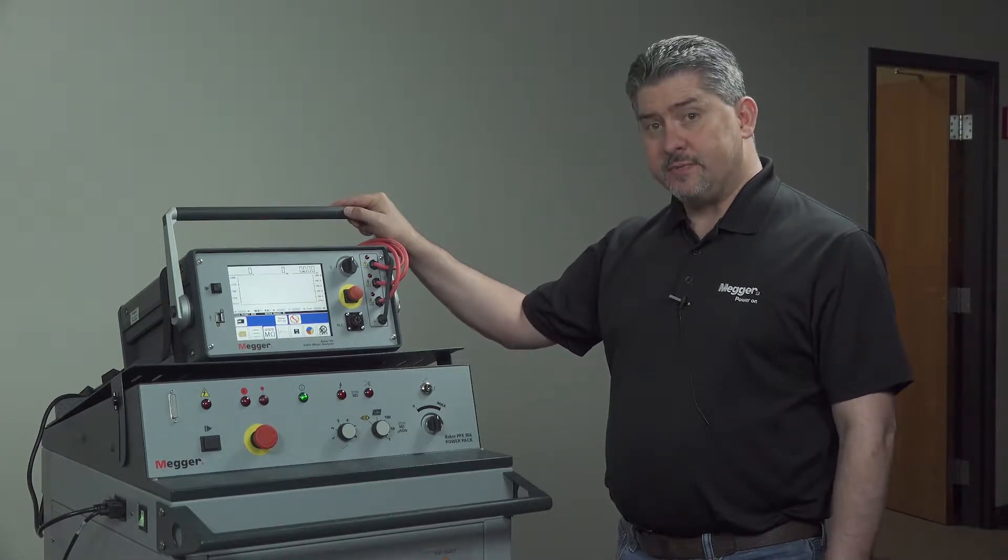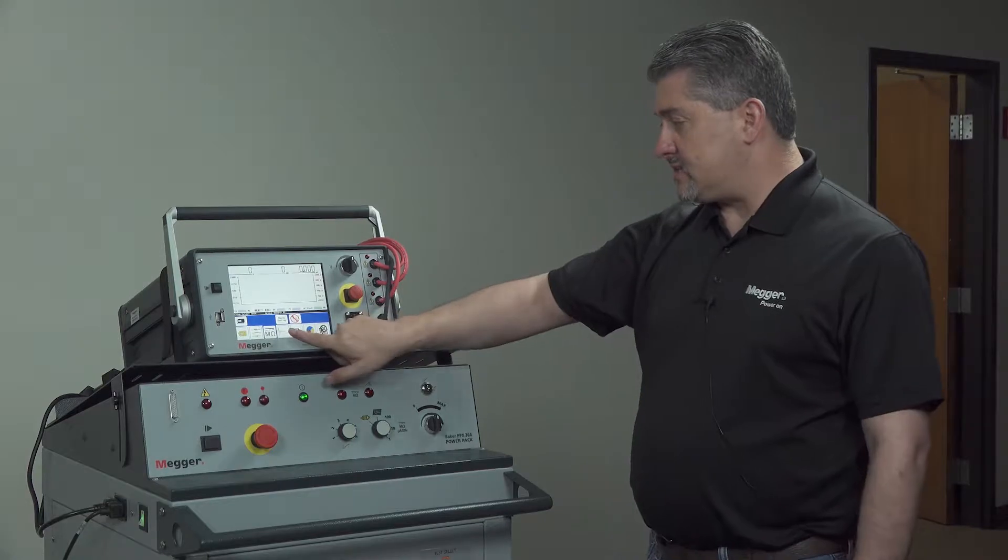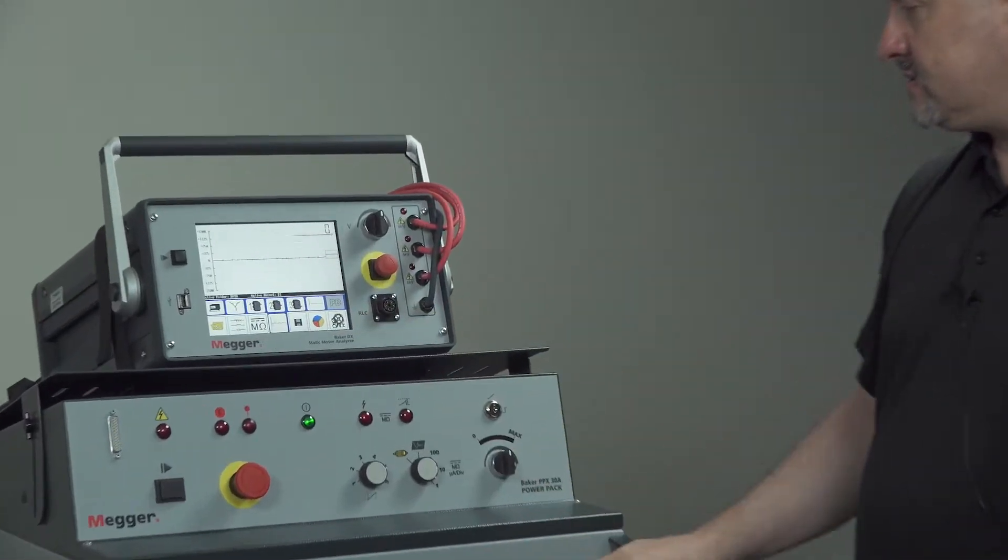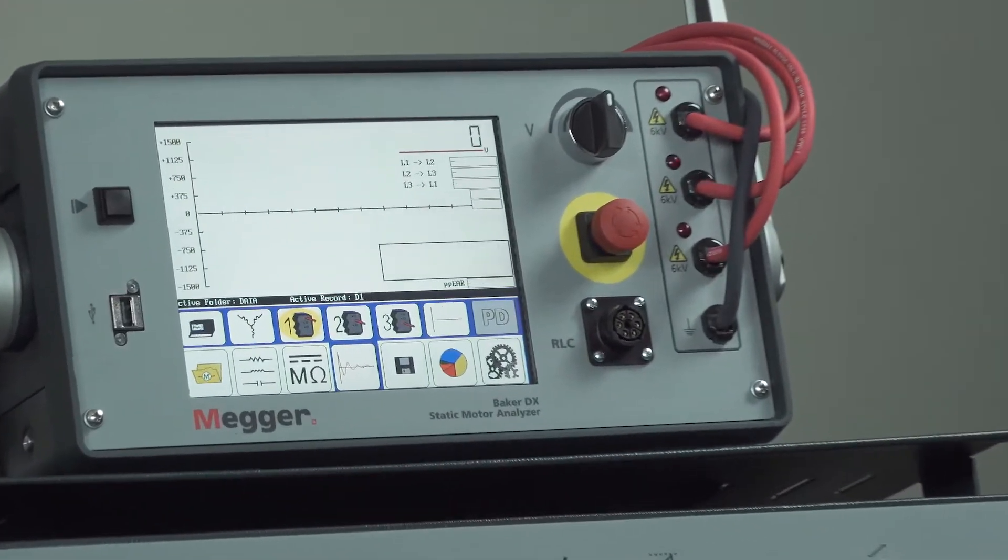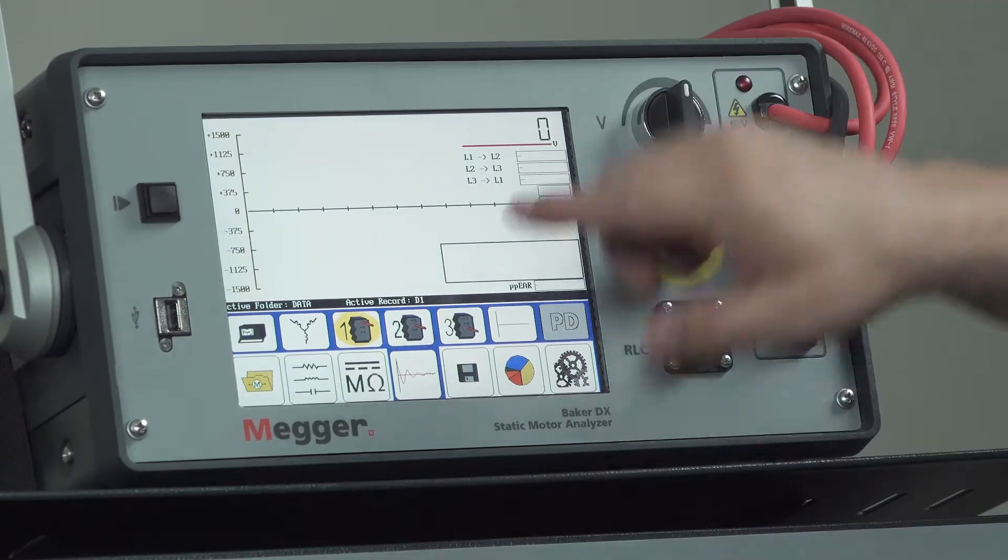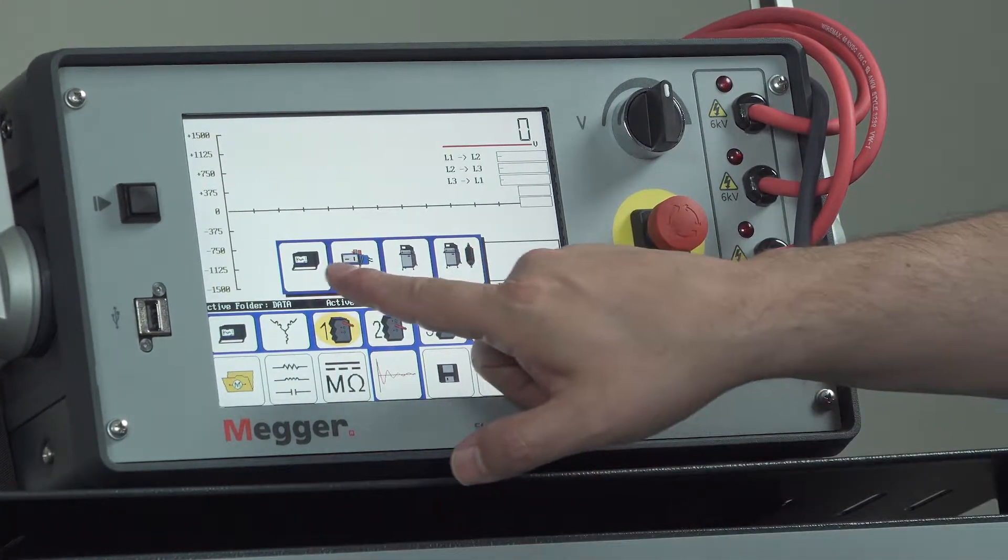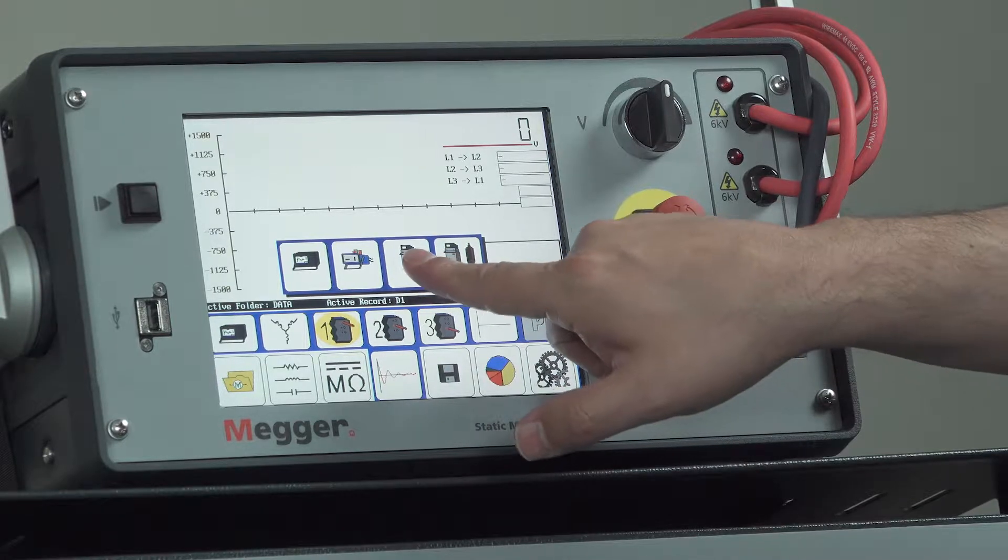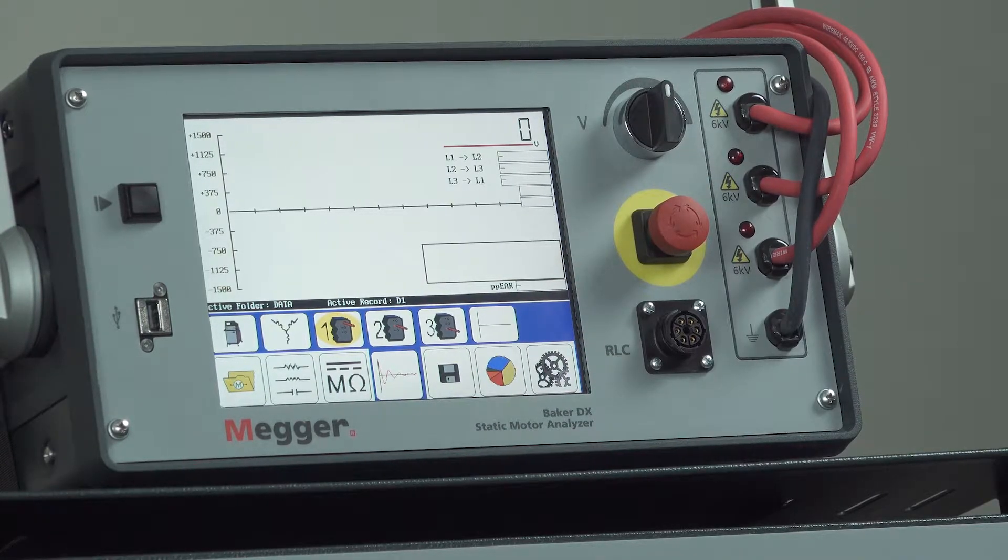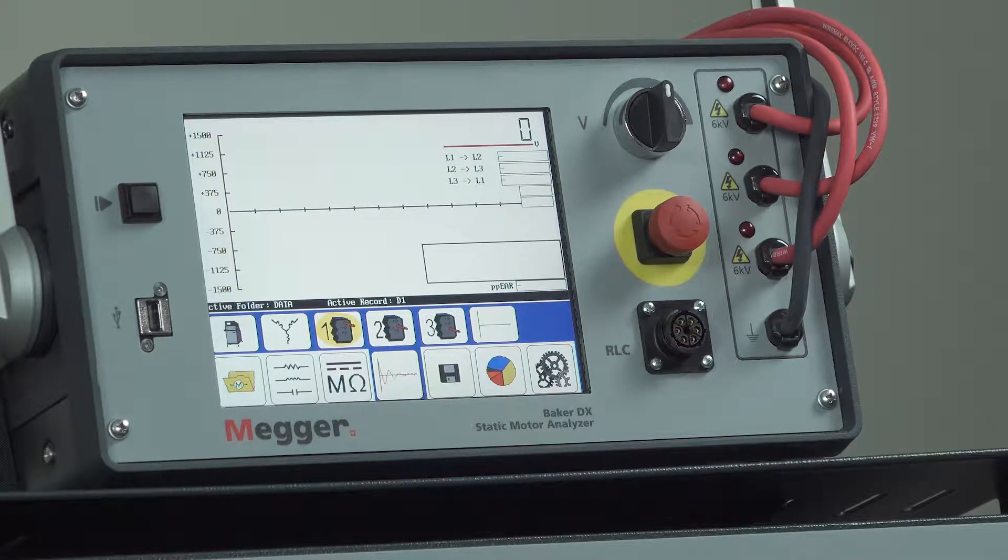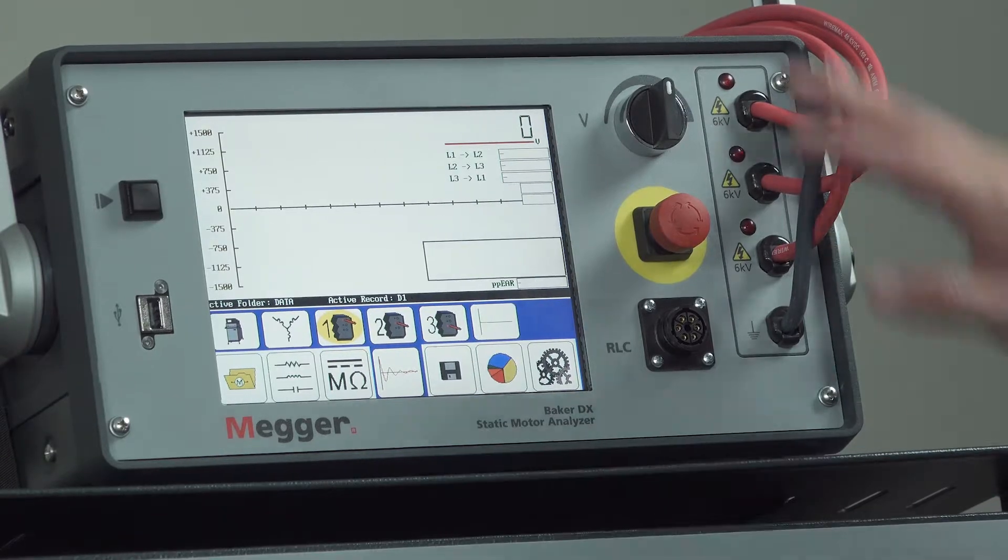The first thing we want to do to start the surge testing is select the surge icon. Then we need to tell the DX that we're going to be using a power pack. We'll select the configuration button, and then we have several options here. We want to select the power pack only. And for this test we're going to start with a three phase test. So we're basically ready to go with the DX.